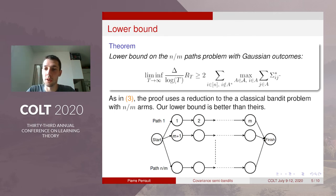So we first begin with a lower bound that is improving on the lower bound of Degenne and Perchet because here we have the norm of covariance matrix coefficients that appears instead of just a summarizing quantity gamma. And the proof uses the same method, so here we consider the n over m path problem with Gaussian outcomes and this reduces to a classical multi-arm bandit problem and we apply Lai-Robbins bounds.